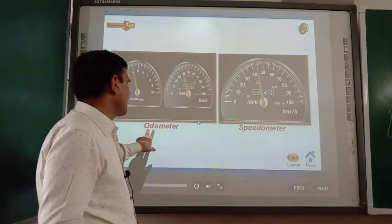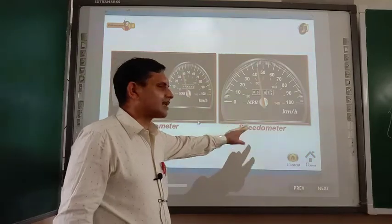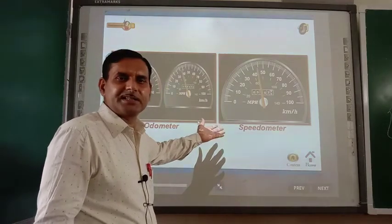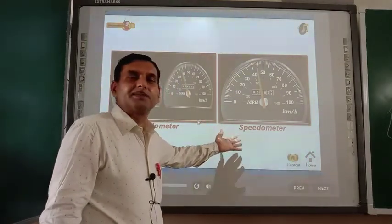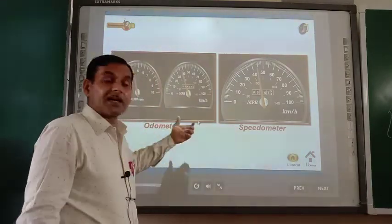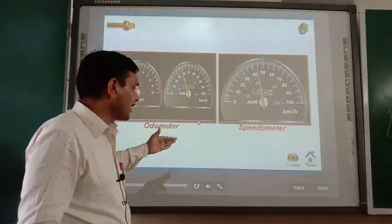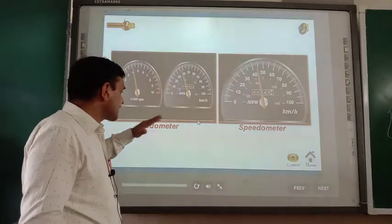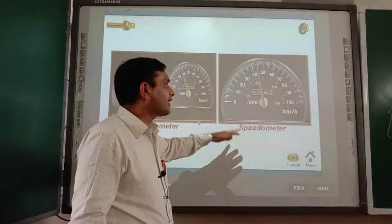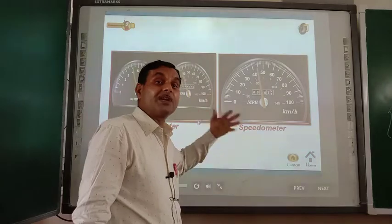There are two instruments: one is the odometer and the other is the speedometer. These two meters are present in your vehicles and you can see them very easily. The speedometer measures the speed of your vehicle, while the odometer records the distance travelled by your vehicle.